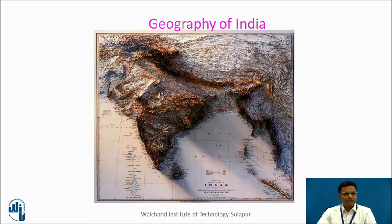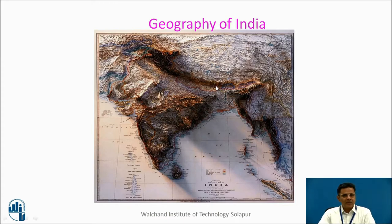This is a map which shows the geography of India. These are the Himalayas, these are the North Indian Plains, this is the Deccan Plateau, these are the Western Ghats, and these are the Eastern Ghats.